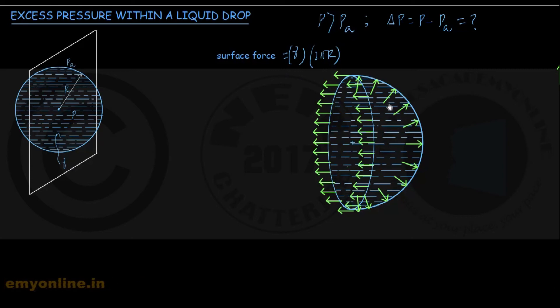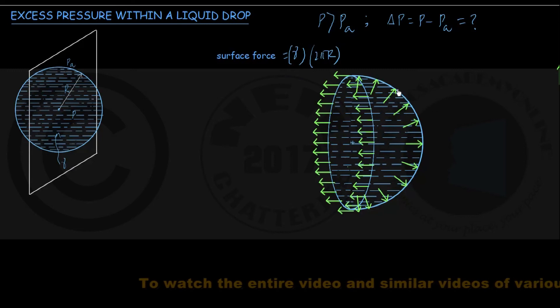What you do is that this hemispherical surface is broken down in imagination into small tiny areas of dA each. If excess pressure is delta P, that is P minus PA, on each of these tiny areas, pressure force is acting of magnitude delta P into dA, dA being the area into consideration. That force is acting in the radially outward direction.